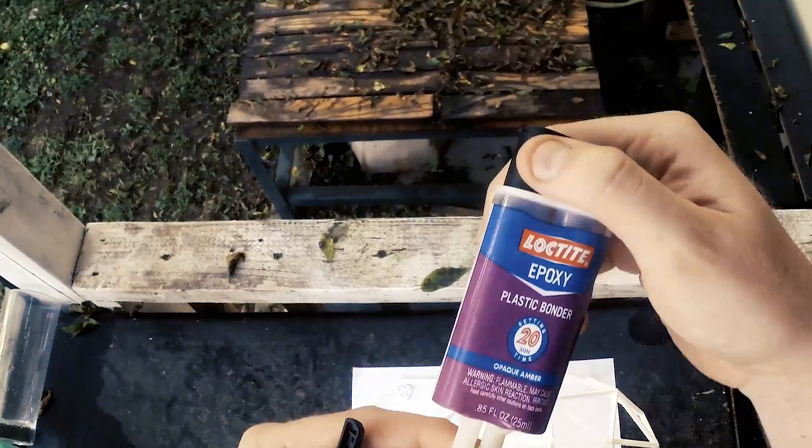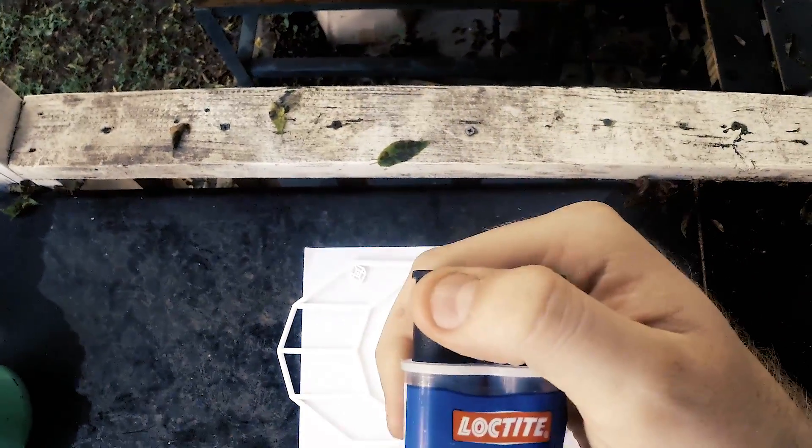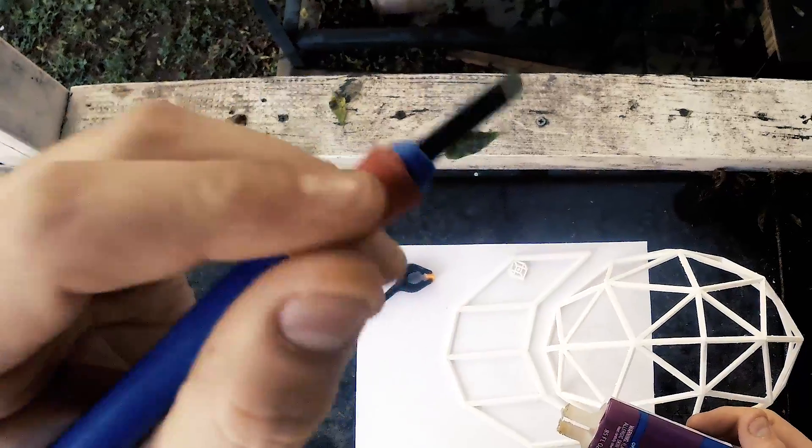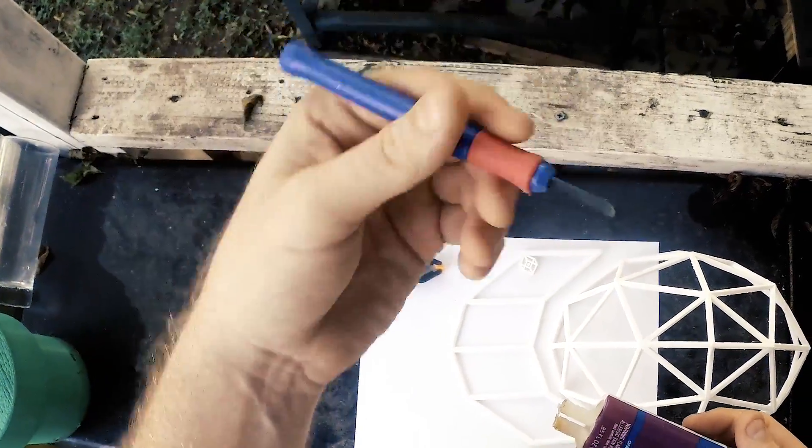You can use whatever kind of glue you like. I've been using this Loctite Epoxy Plastic Bonder two-part mix. You'll also need a clip and some kind of mixing tool like a pencil or 3D printing tool.